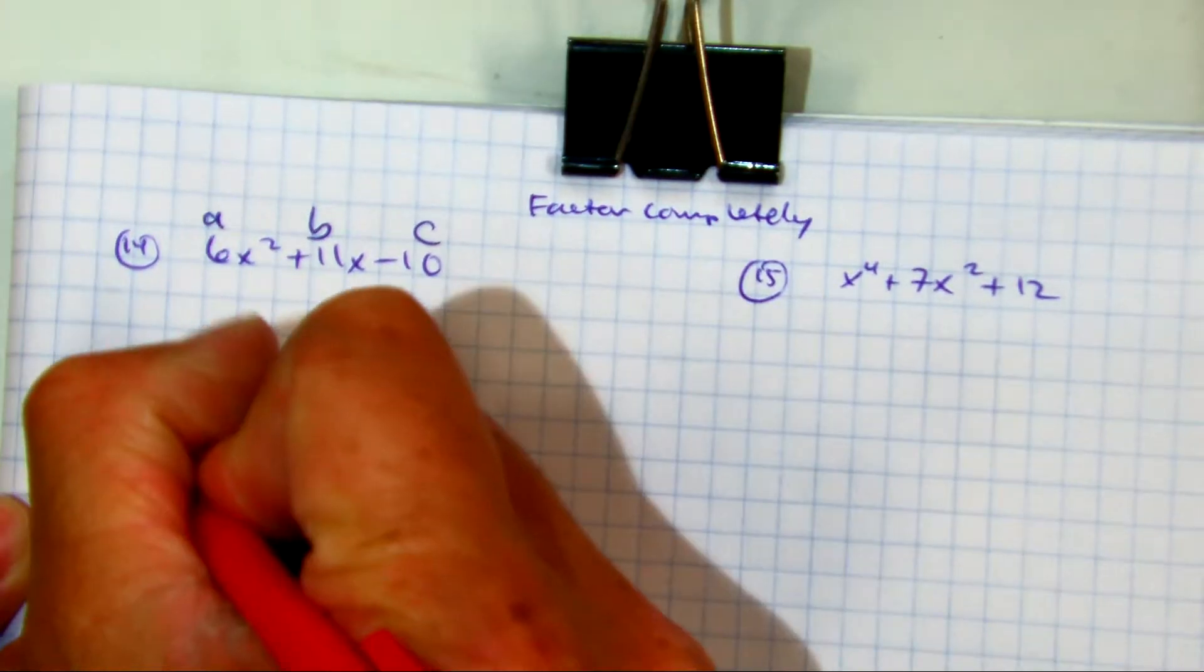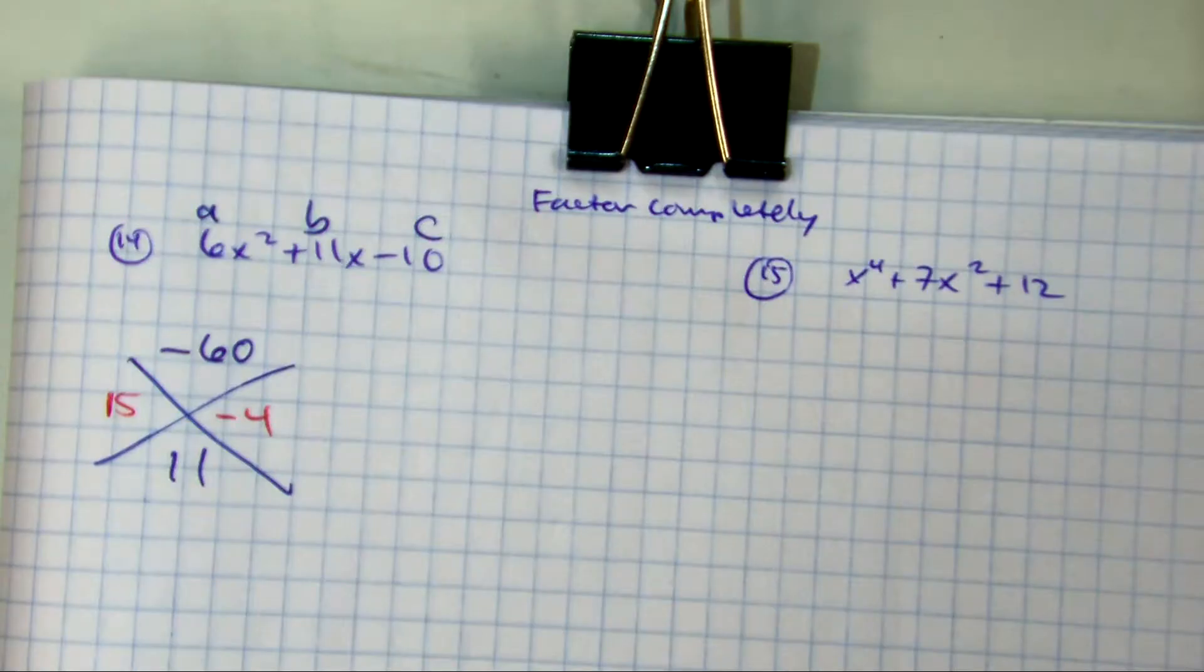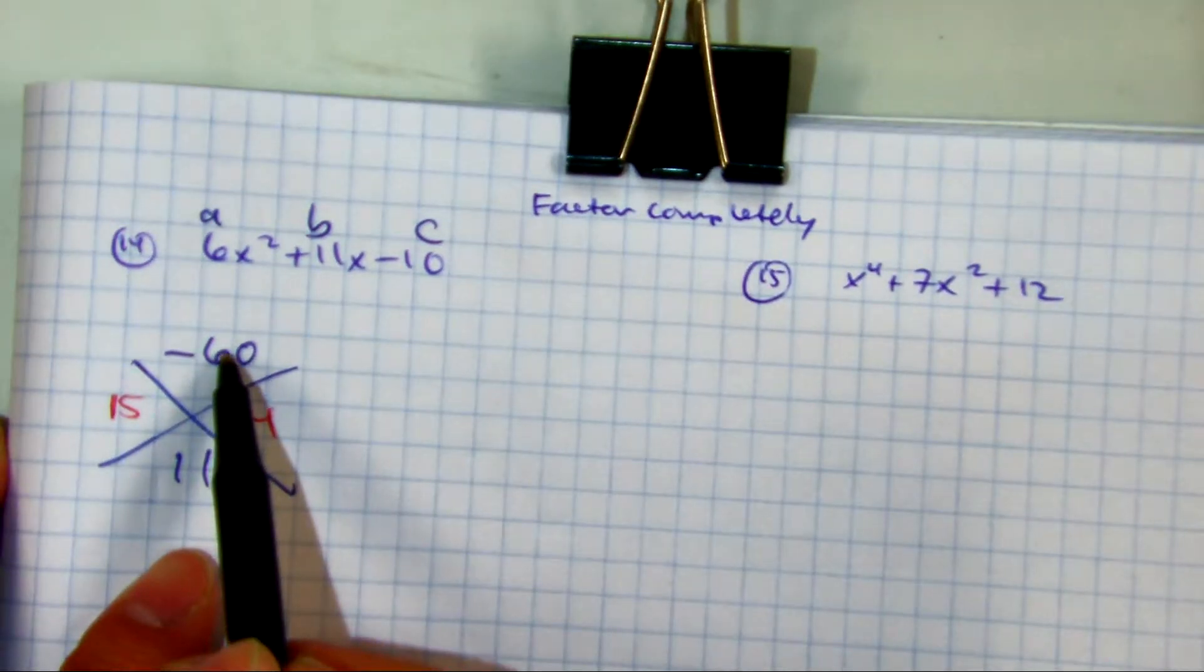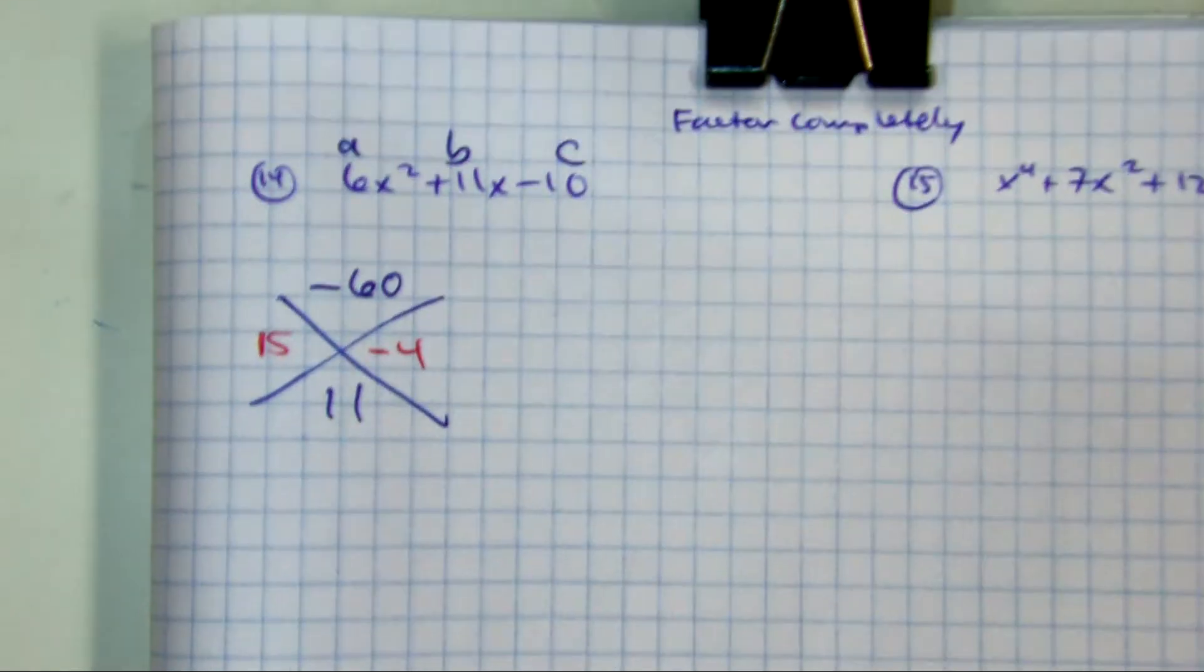All right, I want to stop us here. Let's just say you're struggling with coming up with the numbers of negative 60 or just 60 in general. Come up with all of the factors.